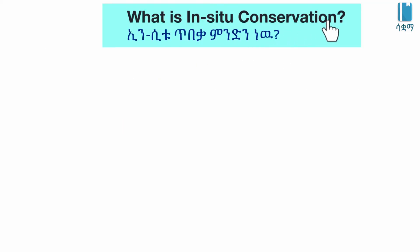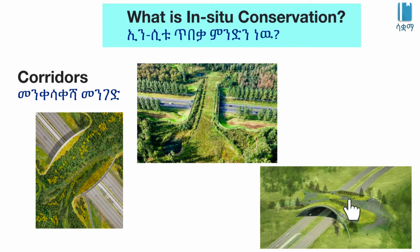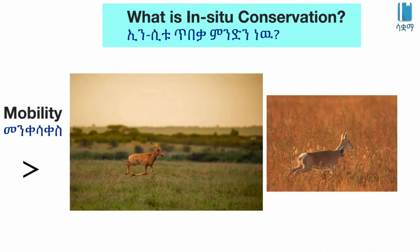What is in-situ conservation? In-situ conservation is the conservation of biodiversity in their natural habitats itself. In-situ conservation is especially considered a good source, and examples include National Parks, Biosphere Reserves, and Sanctuaries.